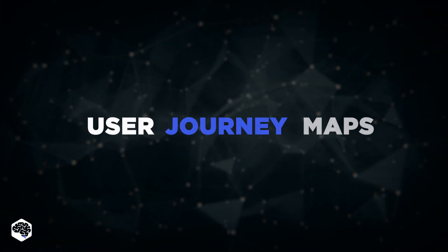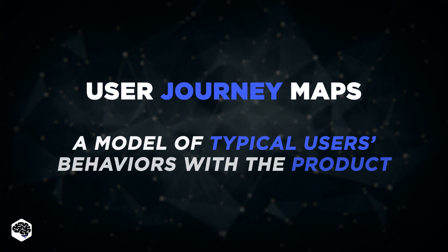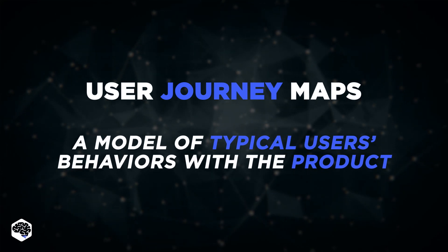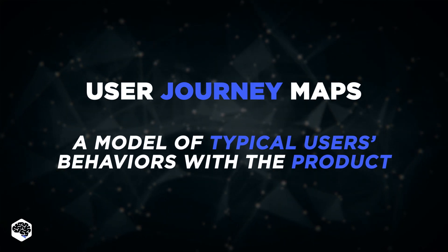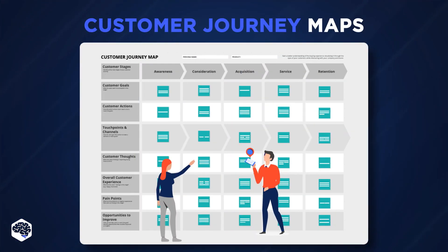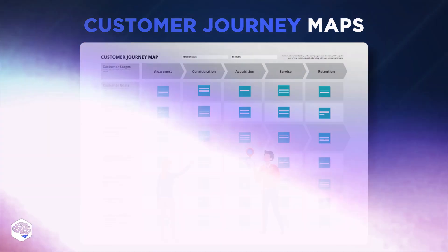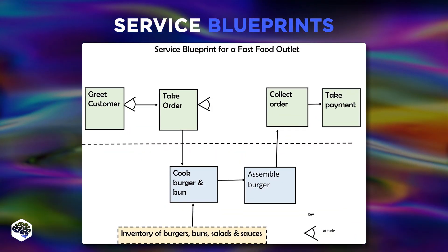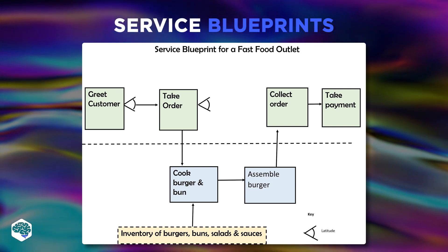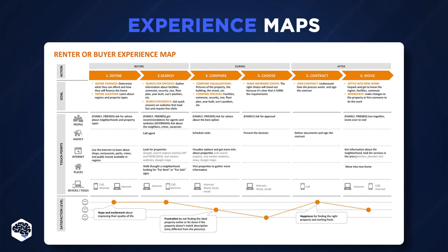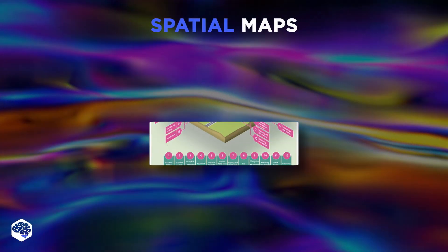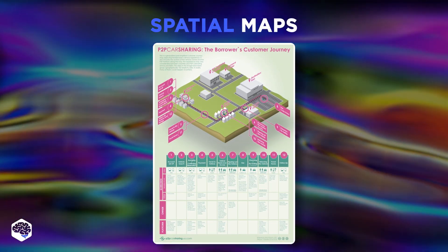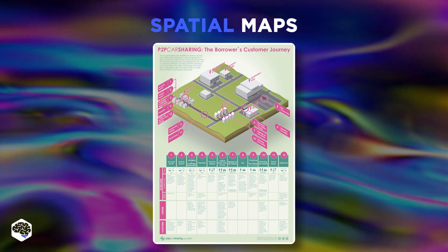Step 2: User Journey Maps. This is a model of typical users' behaviors with the product or service. Here are the following types: Customer Journey Maps, which show user interactions with the app or website; Service Blueprints, a simplified representation of functionality and interface; Experience Maps, which provide all possible scenarios of users' experience; and Spatial Maps — 3D models with the description of typical user experiences.